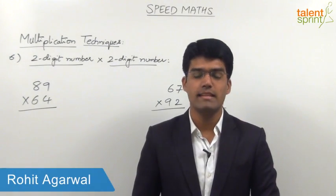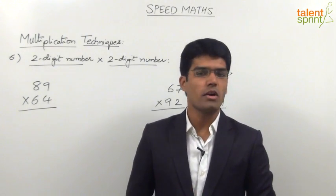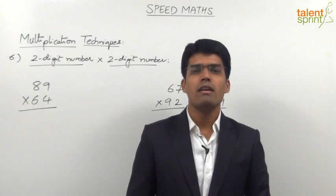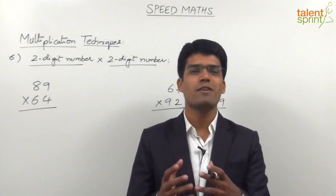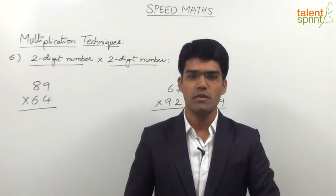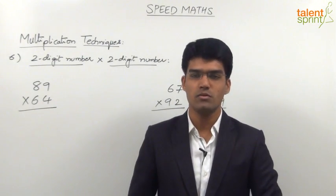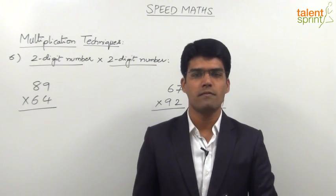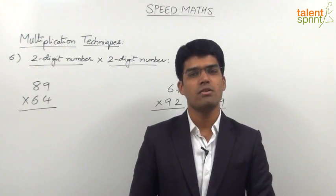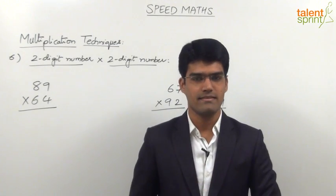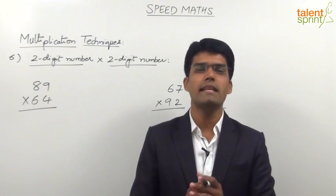Let us now learn the next multiplication technique which will help us to multiply any type of two two-digit numbers. So far whatever methods or techniques that we have learned were all applicable only in some special cases. For example, split and merge is applicable only for simple numbers, a plus b into a minus b is applicable only where the difference is even, and likewise multiplication with 5, 25, numbers close to 100, 1000, or 11 to 90. These are all special cases, but this particular technique is a general technique to multiply any type of two-digit numbers.